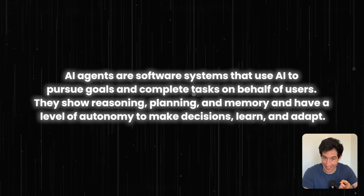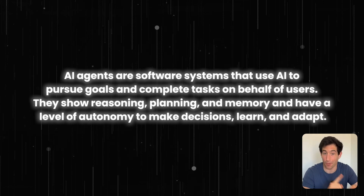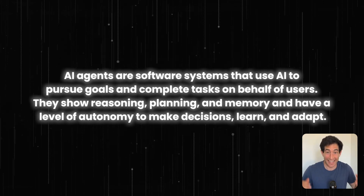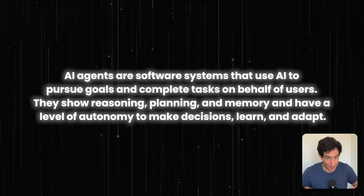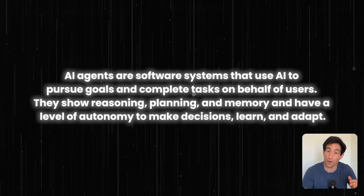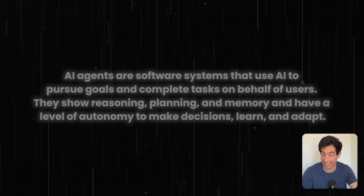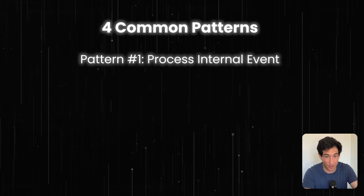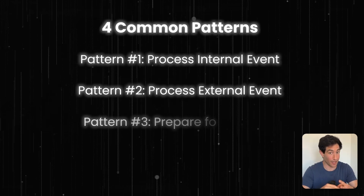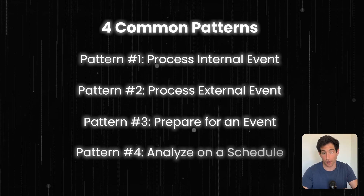So now you know what an AI agent is — you know the technical definition, but more importantly you know the practical definition: an AI agent does work on your behalf without you needing to be directly involved. And you know the four major patterns of AI agent that are going to be useful in your business: number one, reacting to an internal event; number two, reacting to an event in the outside world; number three, preparing for an upcoming event; or number four, running a recurring analysis. Armed with that knowledge, you are now ready to build your very first AI agent. Click the button on screen right now — it'll show you another video where I'll walk you through step by step how to build your first agent. You're going to be surprised how easy it is and how useful it is.